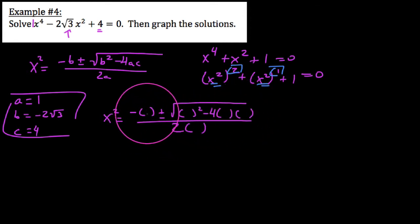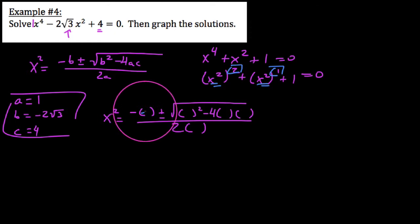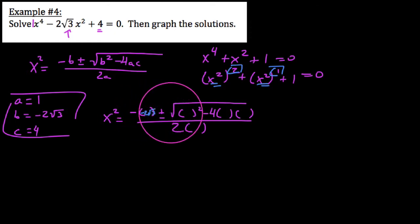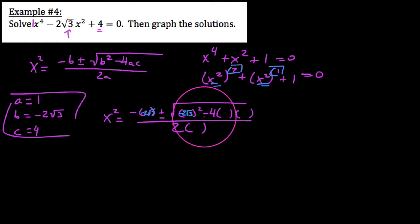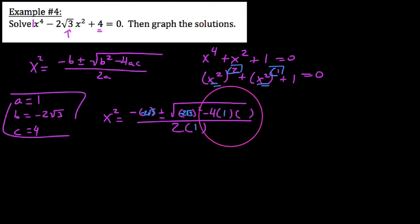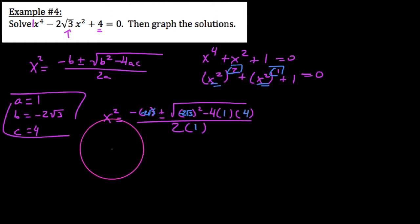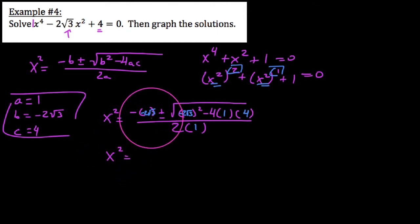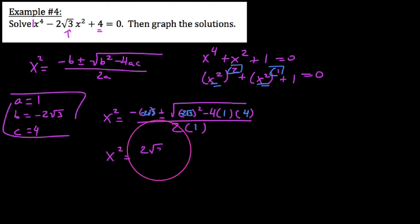So we have b, which in this case is negative 2√3. Our a value is 1 and our c value is 4. So what we get is x² equals negative negative 2√3, which is 2√3, plus or minus the square root of negative 2√3 all squared.